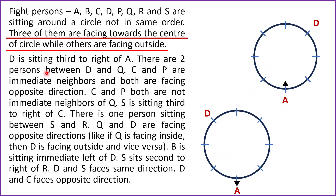There are two persons between D and Q. So one, two — we are going to place Q here at this position in Case 1. In Case 2, again one, two — two people are in between D and Q, so we are going to place Q here at this position in Case 2.